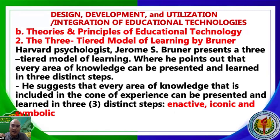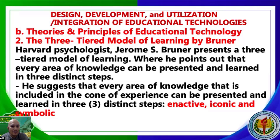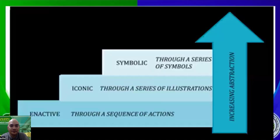According to Bruner, students learn best when we go from concrete to abstract. First comes hands-on — the action (enactive), then learning with images (iconic), and finally the students transform what they have learned into language — they can write or say it (symbolic). The enactive stage is a series of sequential actions, providing direct experiences. Similar to Edgar Dale's Cone of Experience, it goes upward.